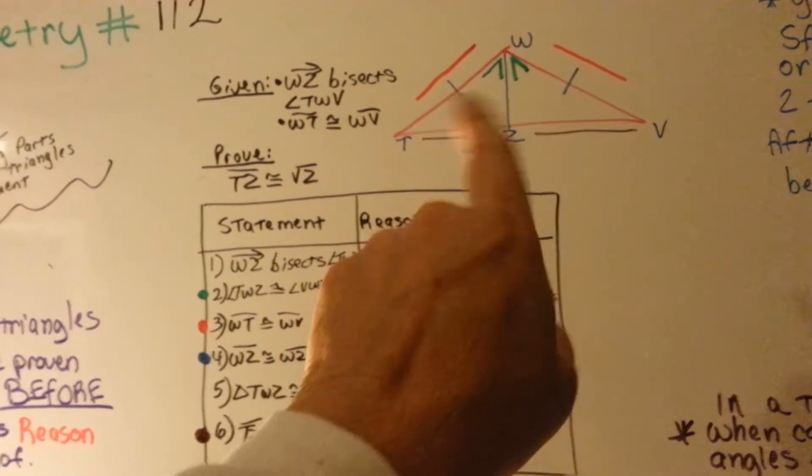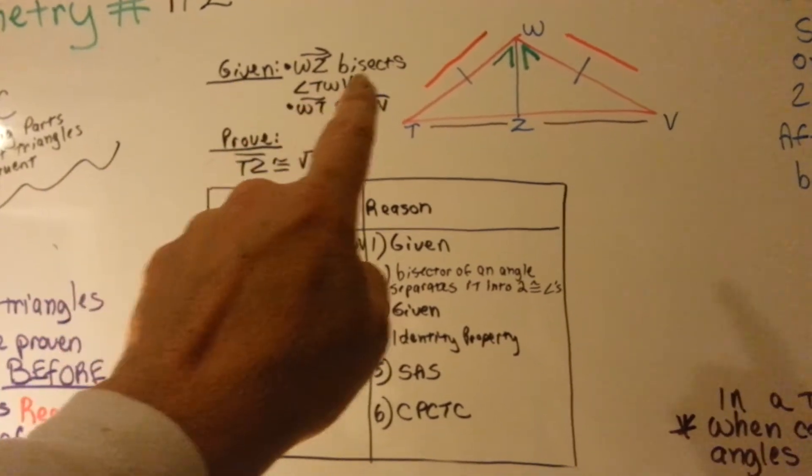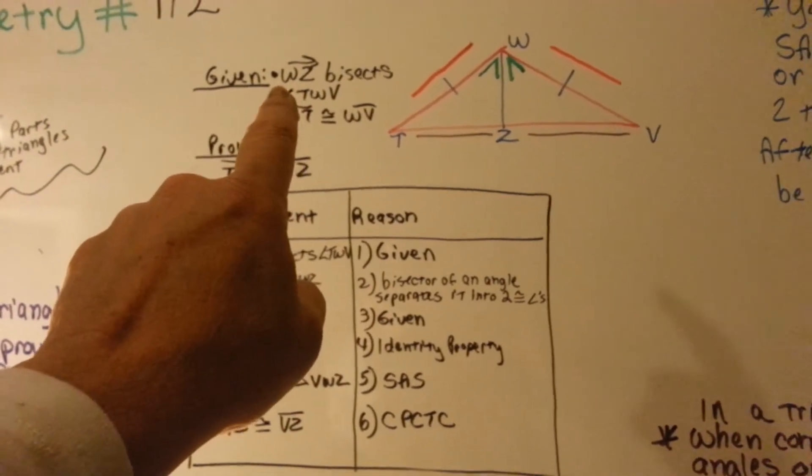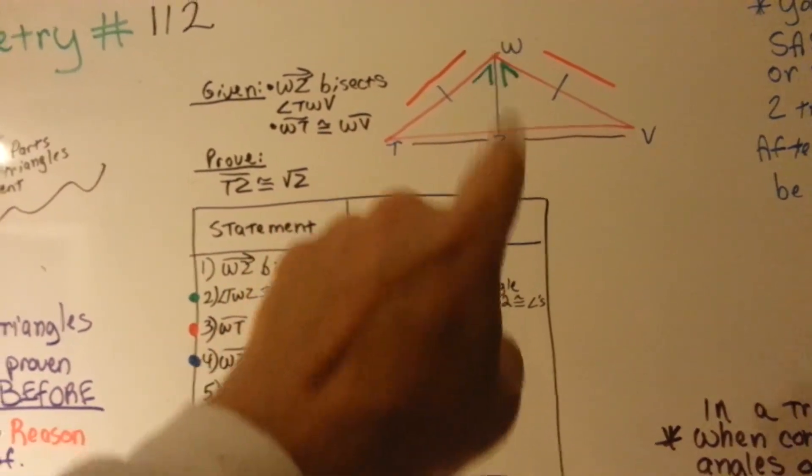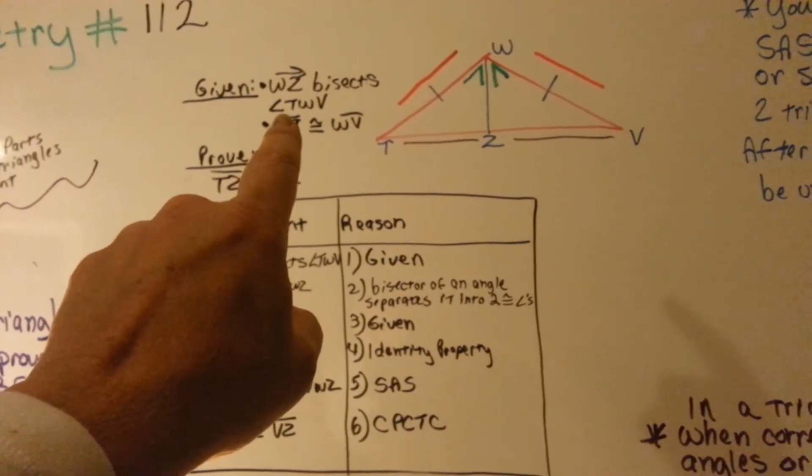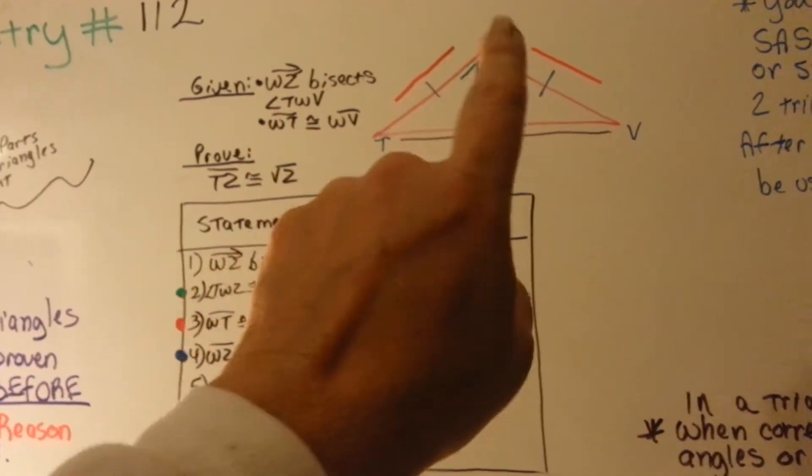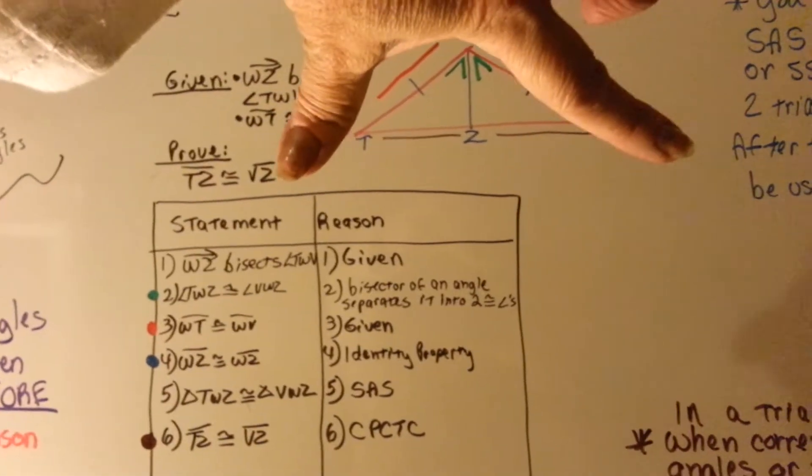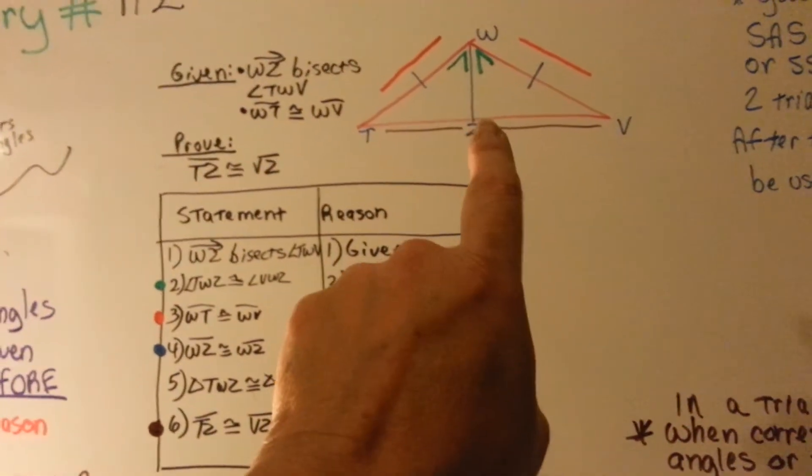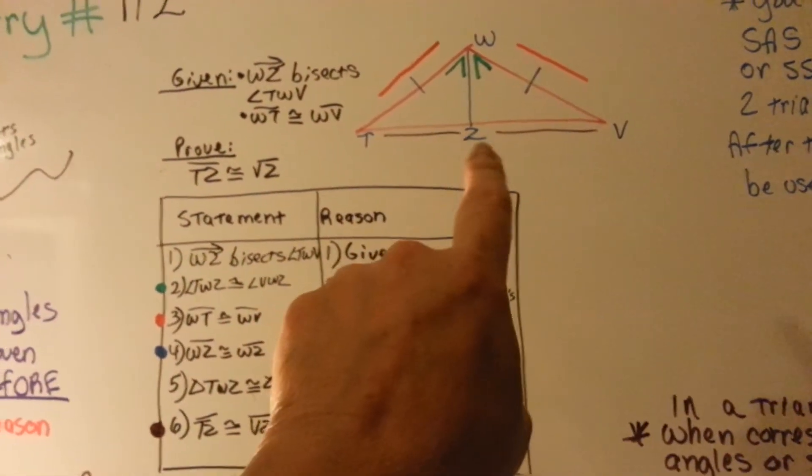We have a slash mark on TW and a slash mark on WV. That means that they're congruent. Our given, our evidence, says that this ray, WZ, this bisector, bisects angle TWV. This thing bisects that angle. See it? That's the midpoint of TV. Z is.